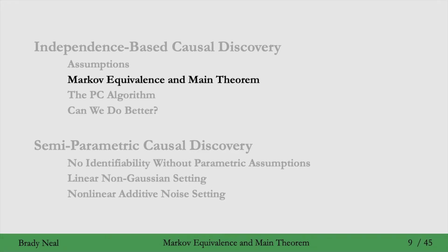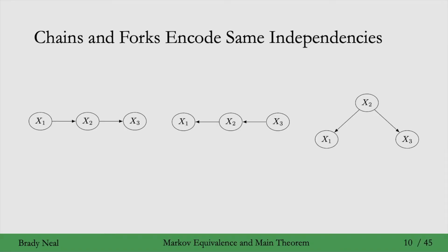In this next section, we'll introduce the very important concept of Markov equivalence and give the main theorem around independence-based causal discovery. Here we have a chain graph going to the right, a chain graph going to the left, and a fork graph. Recall that we first saw these structures back in week 3, and we saw what conditional independence assumptions these graphs imply given the Markov assumption — that x1 is independent of x3 conditional on x2. In all three of these different graphs, this is the case.